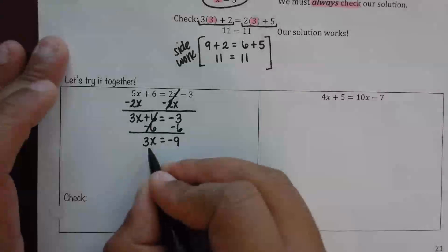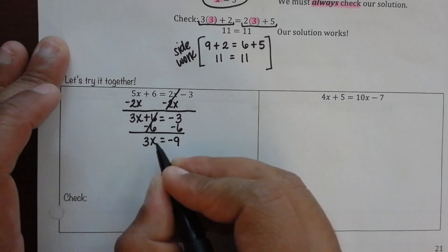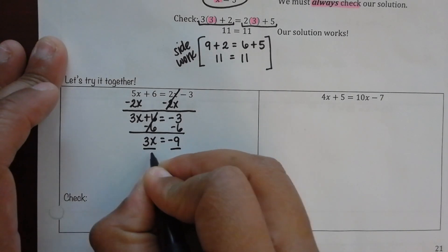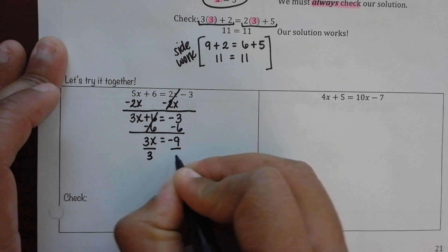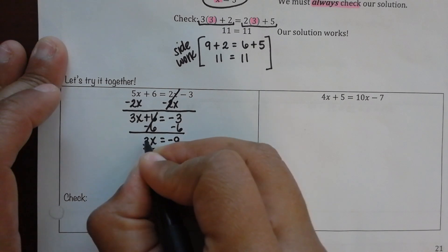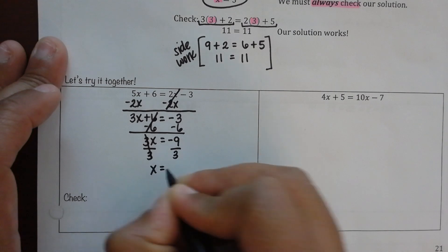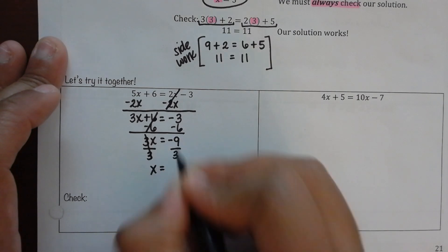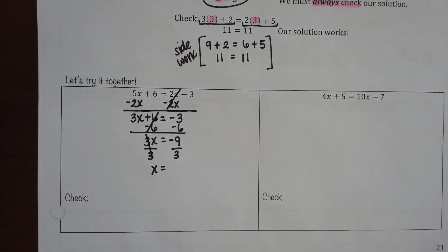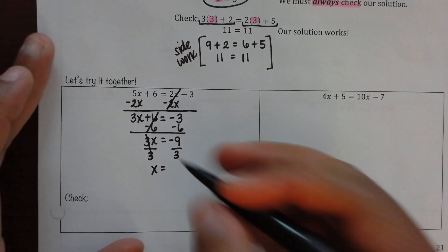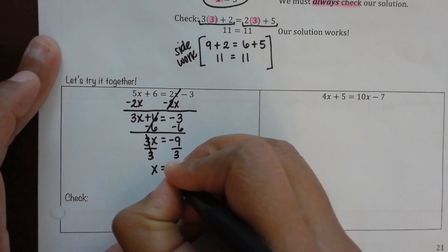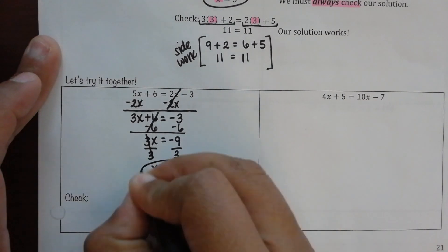So, what do I need to do now to get x by itself? Divide 3 on both sides. What happens to those 3s? What's brought down? What's being typed in? Negative 9 divided by 3. What'd y'all get? Everybody get negative 3? Yes.